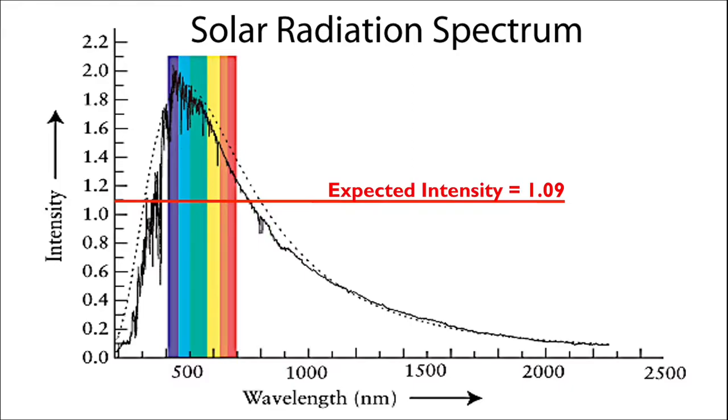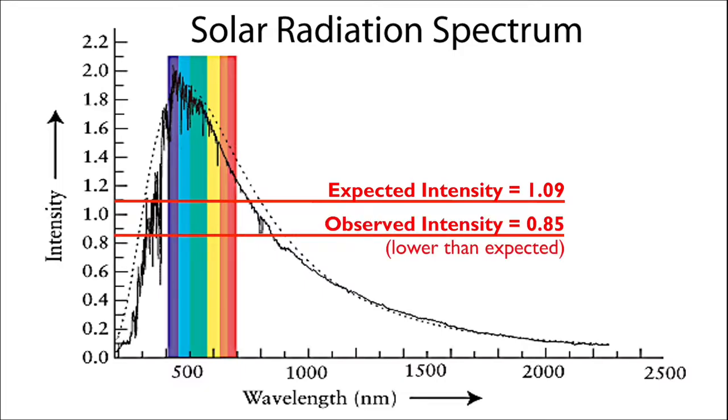The expected intensity according to the ideal black body curve is at a value of around 1.09. The observed intensity, however, is much less, carrying a value of around 0.85 instead.